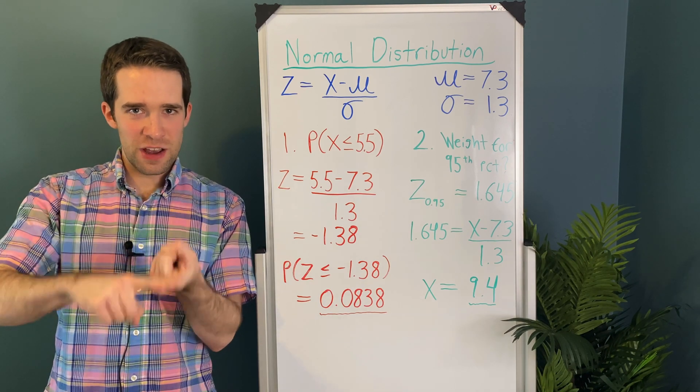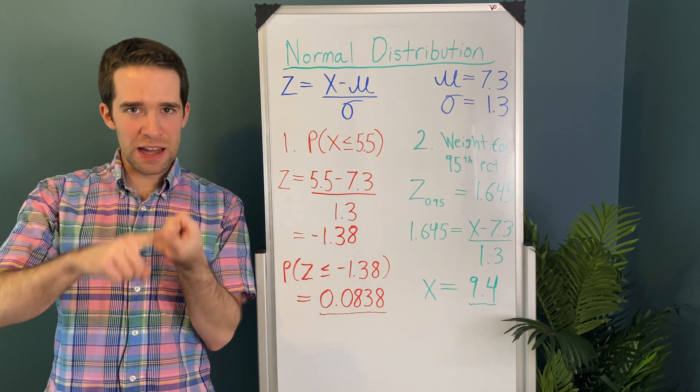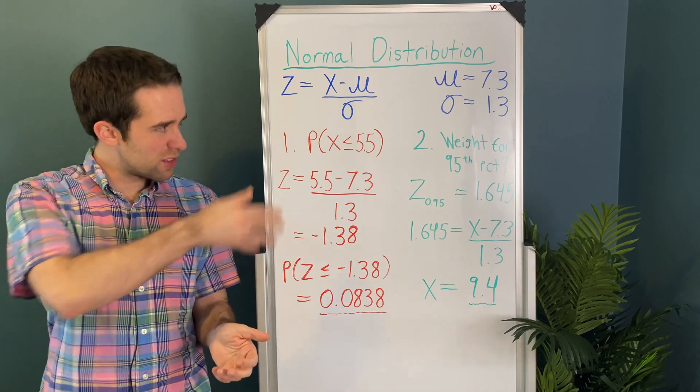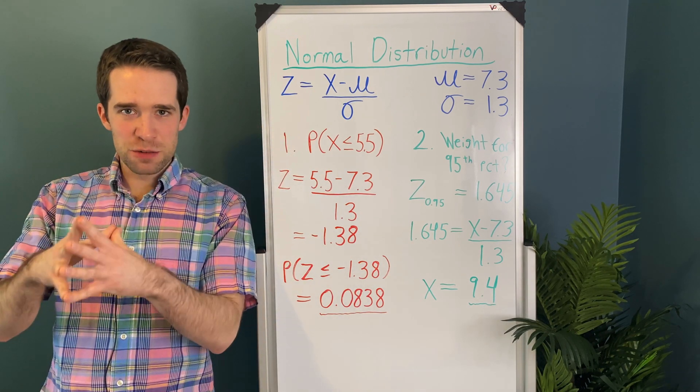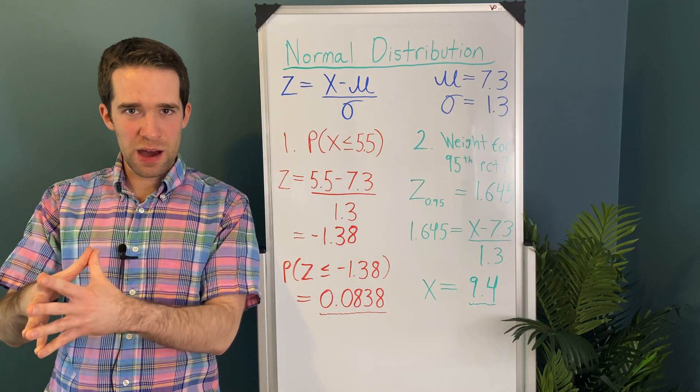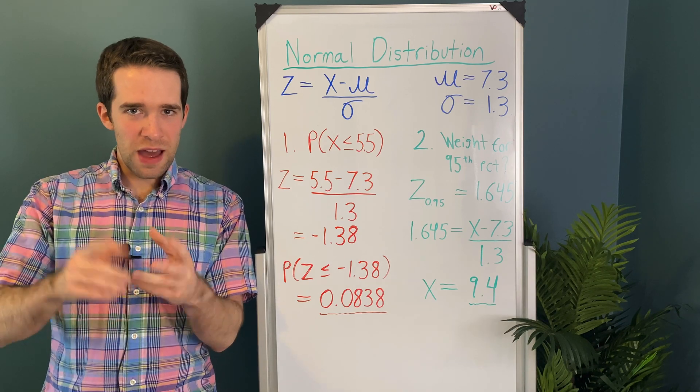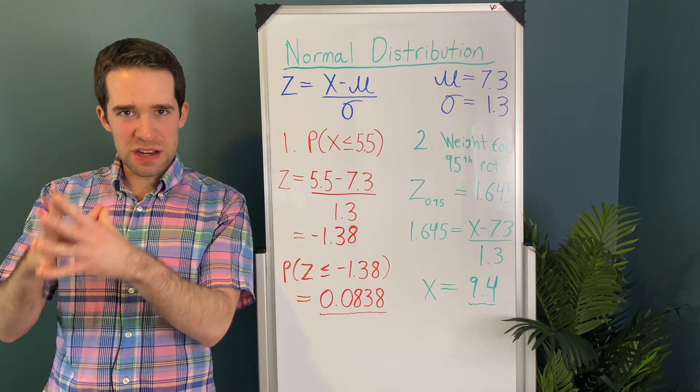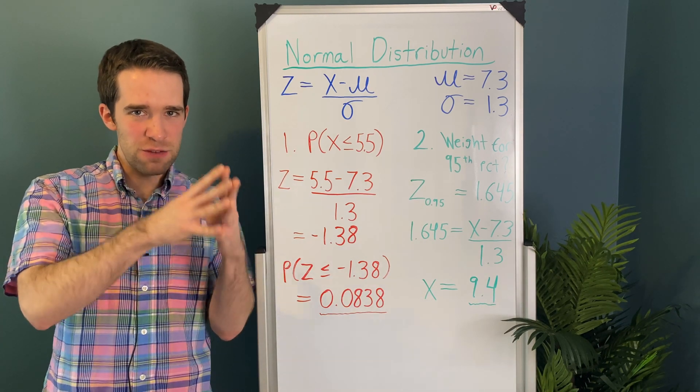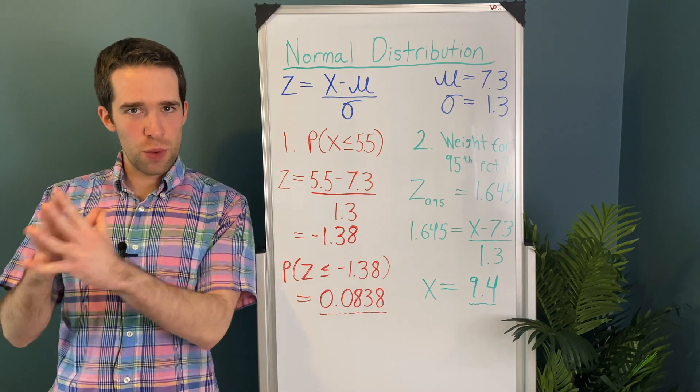So we're going to ask two questions. Number one, what's the chance that a baby is born at low birth weight? That is, what's the probability that a baby is born at less than 5.5 pounds? And then number two, how heavy does a baby need to be to be in the 95th percentile of birth weight?